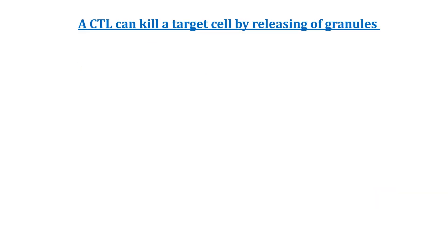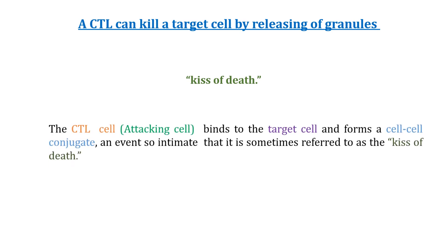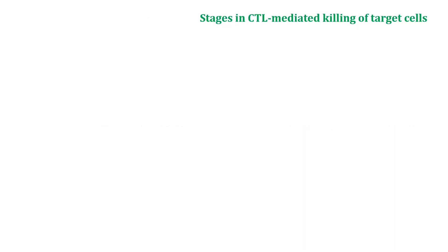The CTL can kill a target cell by releasing granules. This mechanism is called the 'kiss of death.' Why is it called the kiss of death? Because CTL — the attacking cell — binds to the target cell and forms a cell conjugate, so intimate and close to each other that it is sometimes referred to as the kiss of death.